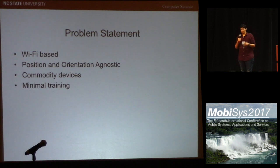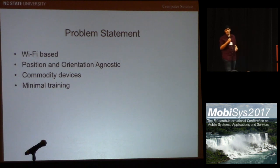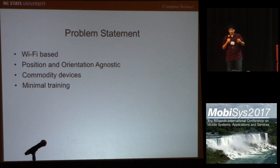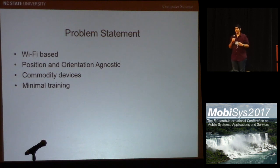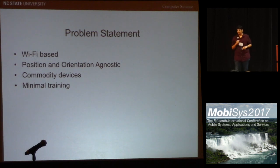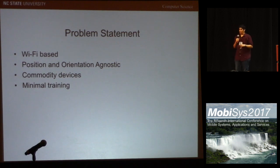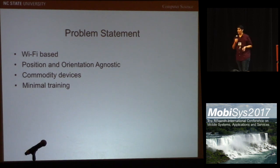For example, if I am standing here and using the system from this configuration, I can collect training data at this configuration. But the main problem is if there are 6 gestures and the system requires 10 samples per gesture, that is 60 samples required for each configuration. Now if I want to use the system from 5 different configurations, which is quite common, then I need to provide 320 samples. This is why we need a smarter approach.